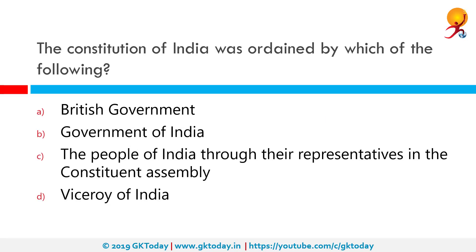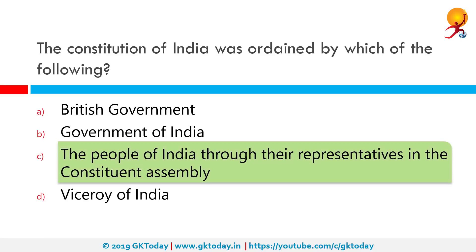The Constitution of India was ordained by which of the following? The preamble starts with 'We the people of India.' So the people of India, through their representatives in the Constituent Assembly, are the people in charge of the Constitution. The correct answer is: the people of India through their representatives in the Constituent Assembly.